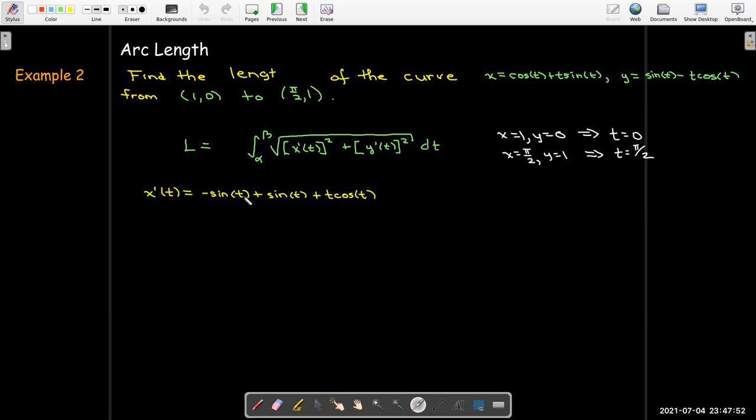When I take the derivative of x prime in the second term, I'll need to use the product rule. But it works out because you can see that the first two terms in the derivative add to make 0. So I'm just left with t cosine of t. And something similar happens with the derivative of y. Y prime of t is going to only have one term after collecting the like terms, just t sine of t.